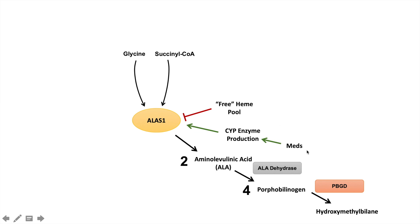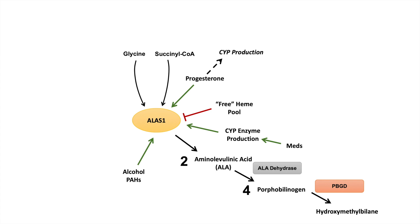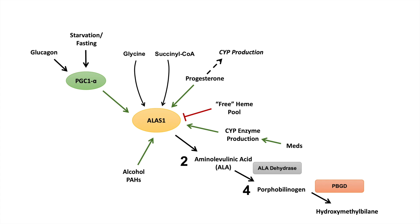Many of the unsafe medications mentioned earlier are triggers because they lead to increased CYP450 enzyme production, activating ALAS-1. Progesterone can directly act on ALAS-1 to activate it and also leads to increased CYP production. Alcohol and polycyclic aromatic hydrocarbons (PAHs) lead to increased CYP450 enzyme production, activating ALAS-1. PGC-1-alpha is also a direct activator of ALAS-1, and glucagon and starvation both activate PGC-1-alpha - which is why starvation, fasting, and caloric reduction can trigger neurovisceral attacks in AIP patients.